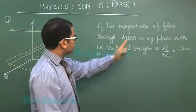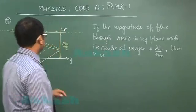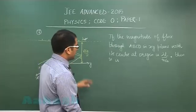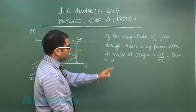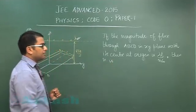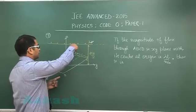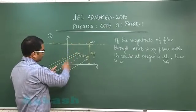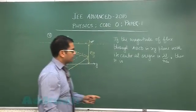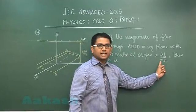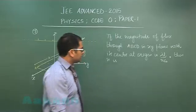If the magnitude of flux through ABCD, the flux through this line charge in the xy plane with its center at origin is lambda l by n epsilon naught. In other words, the flux of the field due to this through this particular rectangular frame is lambda l by n epsilon naught. We need to calculate the value of n.